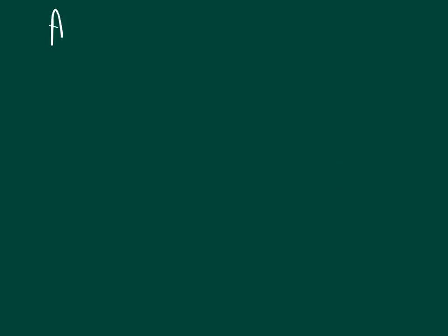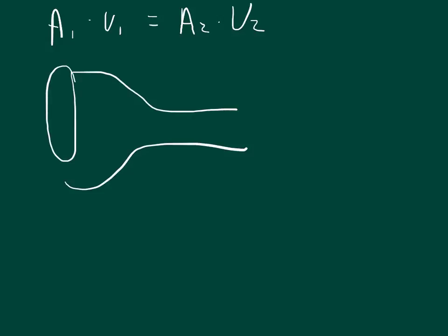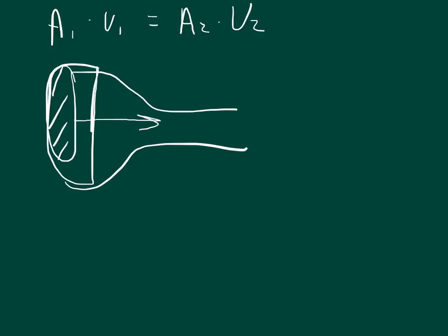In the last video for question number 13, I showed you how to derive the equation of continuity, which is Area 1 times Velocity 1 equals Area 2 times Velocity 2. In our pipe, the cross-sectional area is multiplied by the velocity — the flow of the fluid. For the larger section, that equals the smaller area times its velocity. You can tell intuitively that whenever the pipe shrinks down, the velocity will increase.